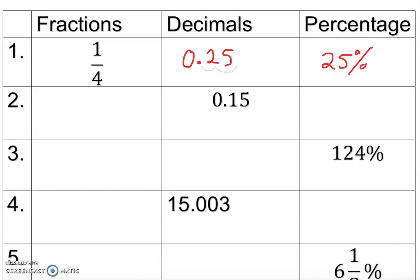The middle one is given as a decimal, so you move it twice to get a percentage — this gives us 15 percent. Now for the fraction: we read 0.15 as 1 is in the tenths place, 5 is in the hundredths place, so we say 15 hundredths — we put down 15 over 100.